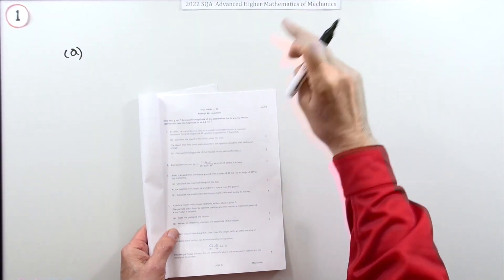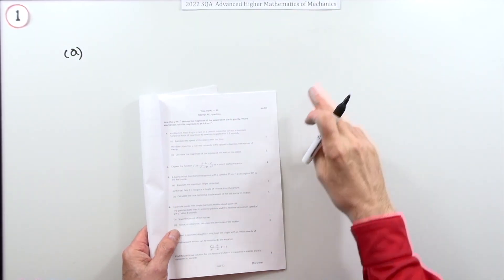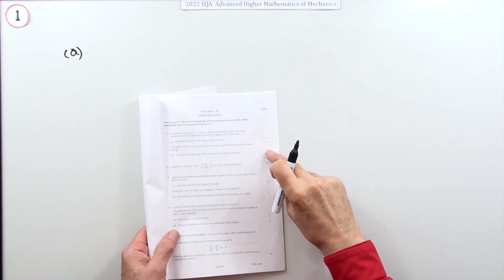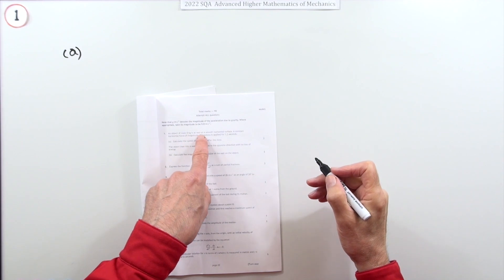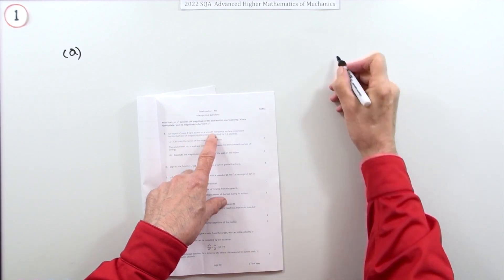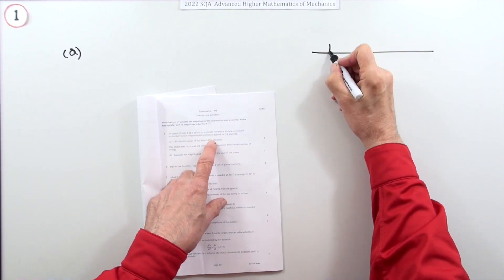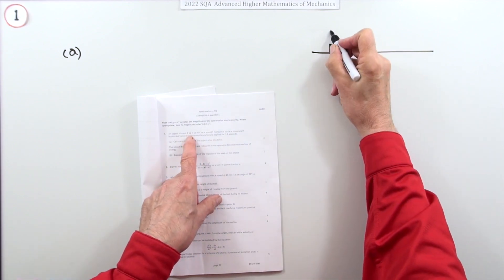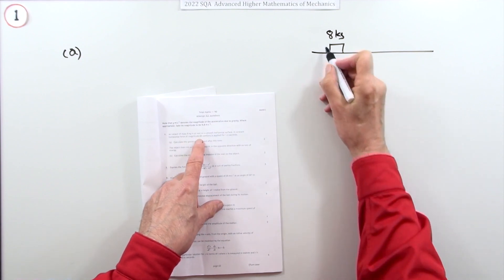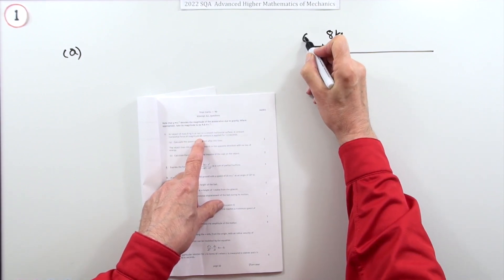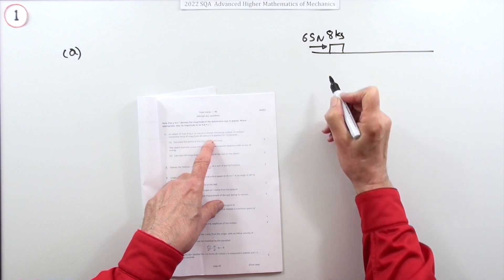Number one, the first question in the 2022 Advanced Higher Mathematics and Mechanics, four mark question. An object of mass 8 kilograms is at rest on a smooth horizontal surface. We'll just put a block down so it doesn't roll away. A horizontal force of 65 newtons is applied.